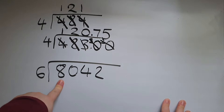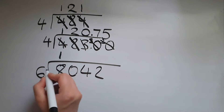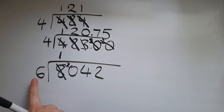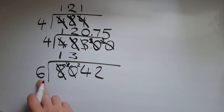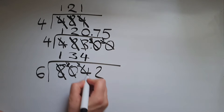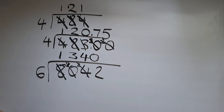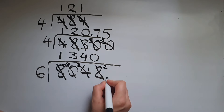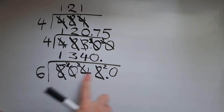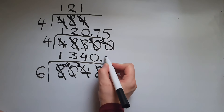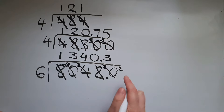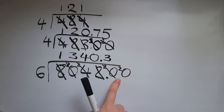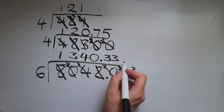How many 6s fit into 8? That is just 1, because 1 times 6 is 6, and we have 2 remaining. How many 6s fit into 20? That would be 3, because 3 times 6 is 18, so there are 2 remaining. How many 6s into 24? That is exactly 4. How many 6s into 2? Zero, with 2 remaining. We add a decimal point and zeros. How many 6s into 20? Three, which makes 18, again leaving 2. Adding another zero — 6 into 20 — again three of them. So we've got the three recurring.